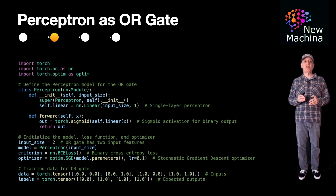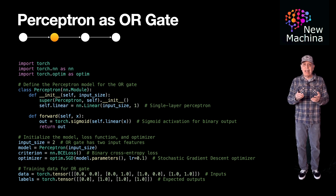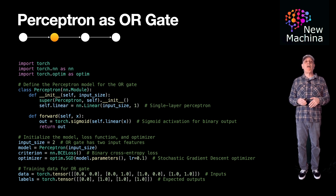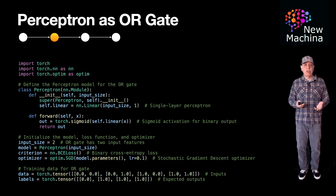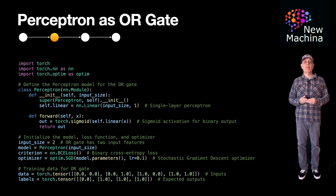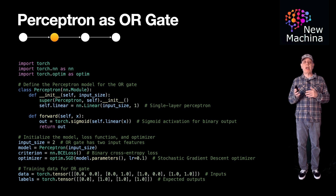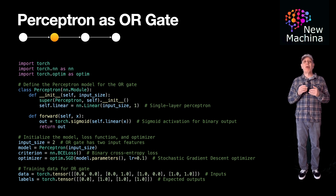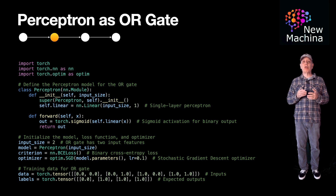Next, I define input size of two for my two inputs and instantiate a Perceptron object. I define a criterion object, then I define an optimizer object. Next, I define my training data. Then I define my corresponding labels to the input training data. These labels represent our desired predicted values given the respective input training data.